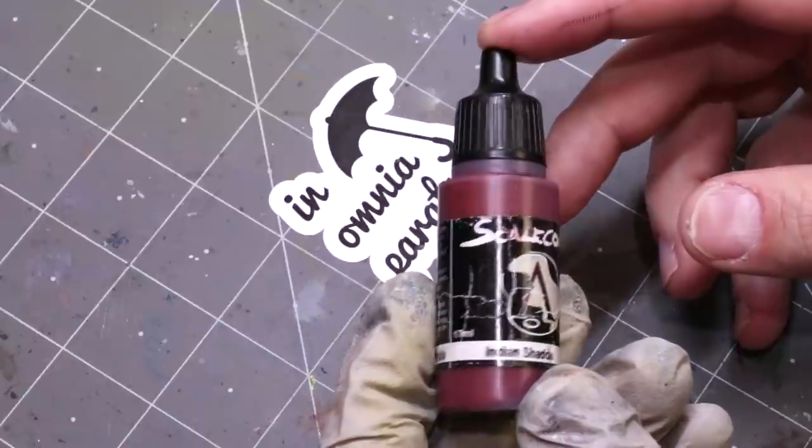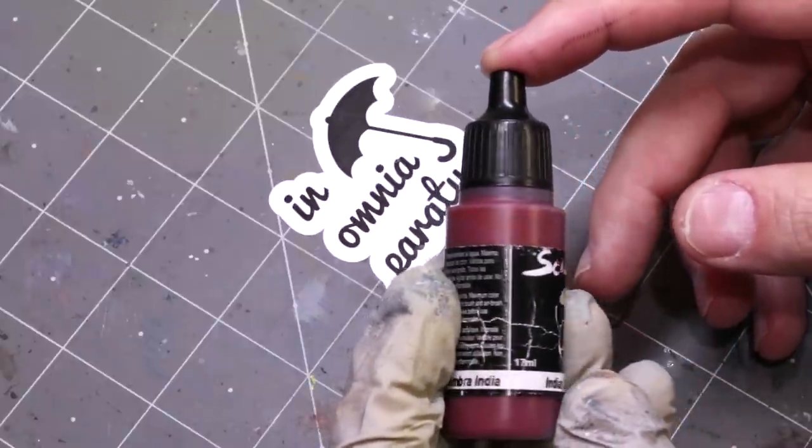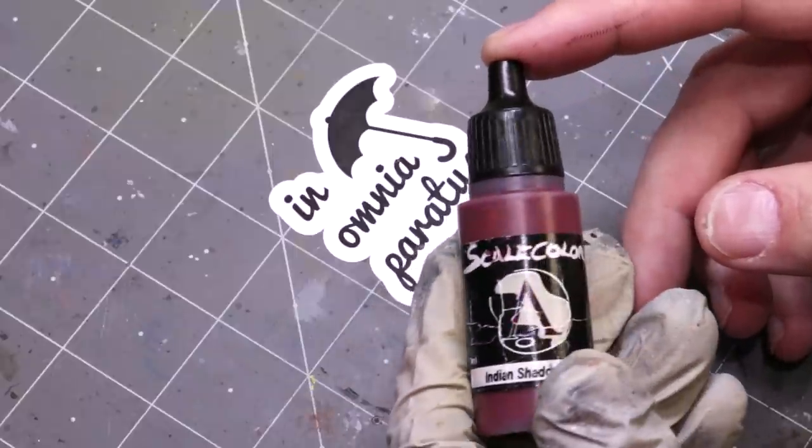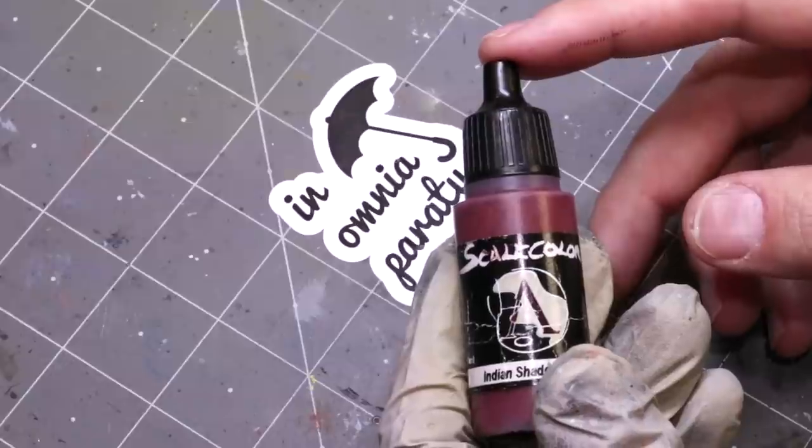Scale 75 is one of the paint ranges out there that has a much higher pigment density, allowing you to take it down and make it thinner without it snapping.